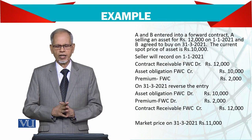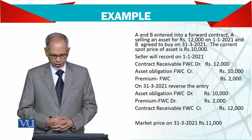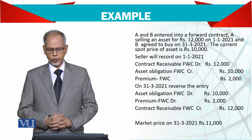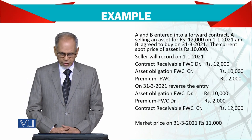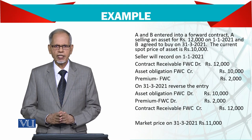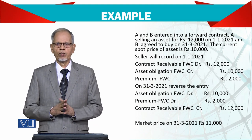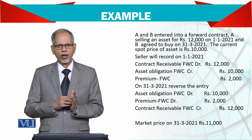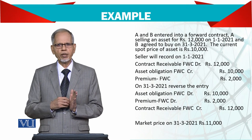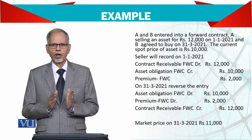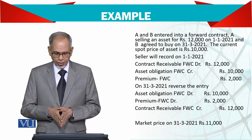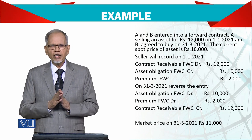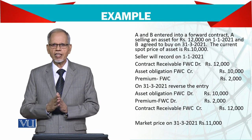इसको बारह हजार में sell करना है। Seller will record on 1st January — यह basic accounting entry है। Receivables debit करेंगे, क्योंकि आपने एक asset बेचना है। इस case में sales as such नहीं है और asset भी अभी exchange नहीं हो रहा, तो simply contract receivables debit करें और asset obligation credit करें।